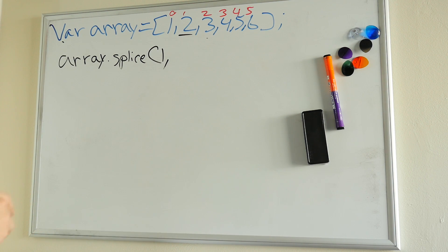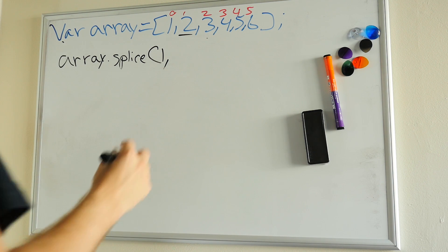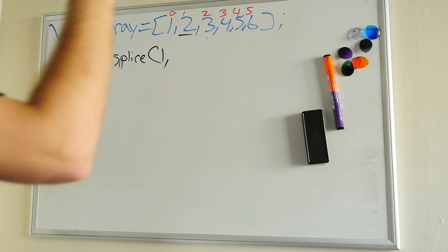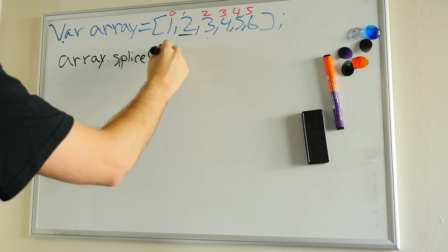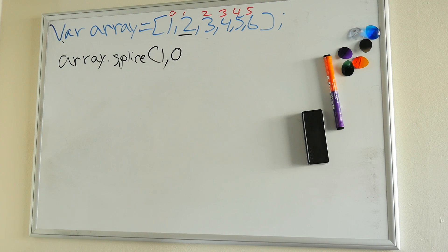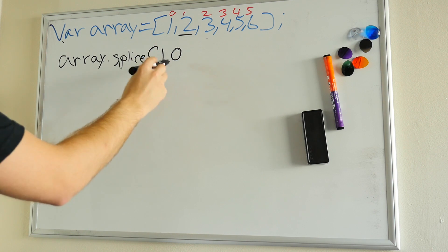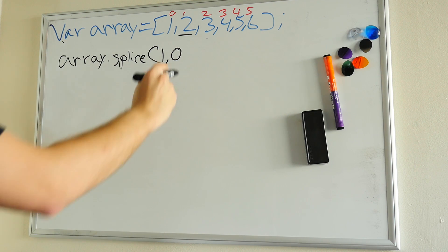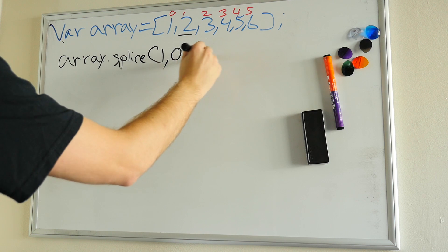So at index one spot, we want to add after that. So 0 means we're not going to delete anything, because this is where you define how many numbers are going to delete. We want to add the number 200.